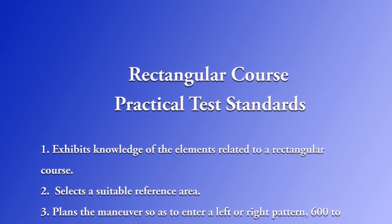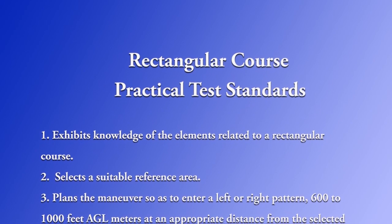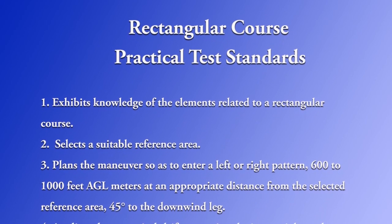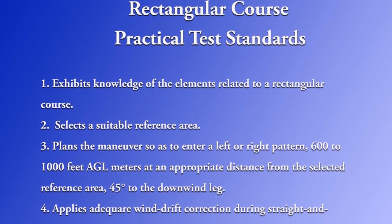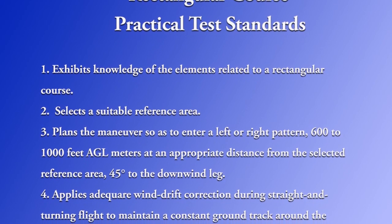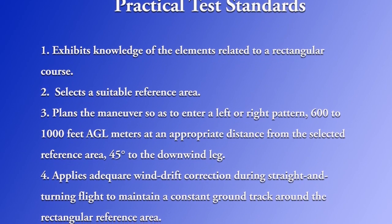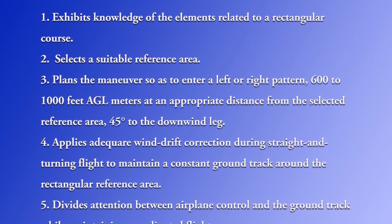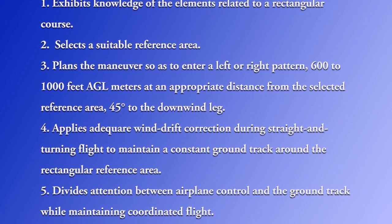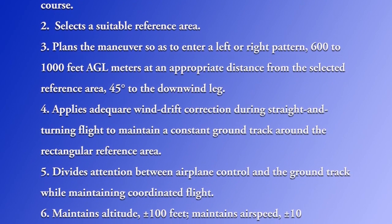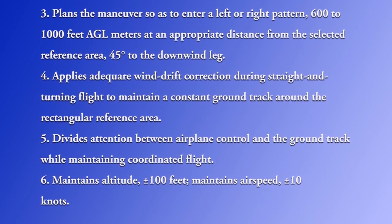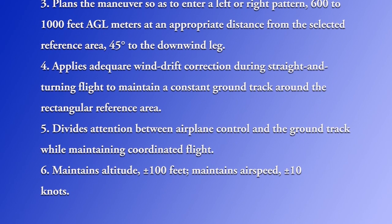As the pilot will have to perform these maneuvers to the flight examiner, the practical test standards include: exhibits knowledge of the elements related to a rectangular course; selects a suitable reference area; plans the maneuver so as to enter a left or right pattern 600 to 1000 feet AGL at an appropriate distance from the selected reference area, 45 degrees to the downwind leg; applies adequate wind drift correction during straight and turning flight to maintain a constant ground track around the rectangular reference area; divides attention between airplane control and ground track while maintaining coordinated flight; maintains altitude plus or minus 100 feet; maintains airspeed plus or minus 10 knots.